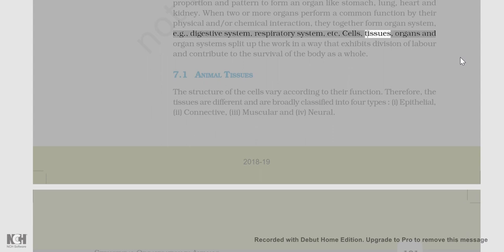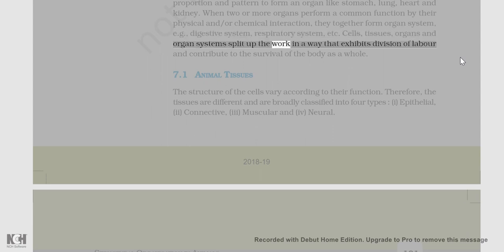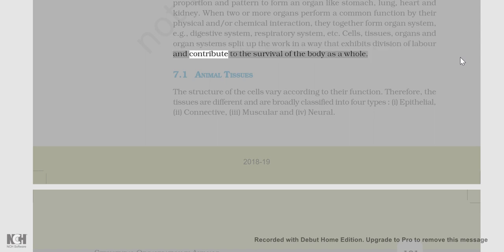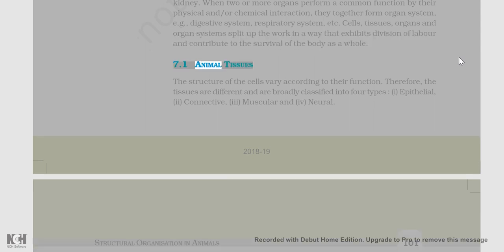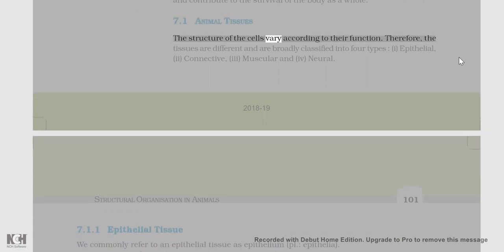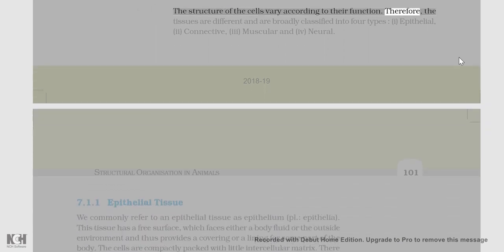Cells, tissues, organs, and organ systems split up the work in a way that exhibits division of labor and contribute to the survival of the body as a whole. The structure of the cells varies according to their function. Therefore, the tissues are different and are broadly classified into 4 types: epithelial, connective, muscular, and neural.